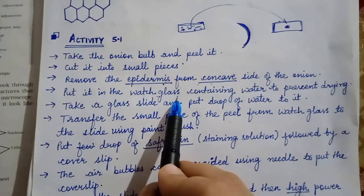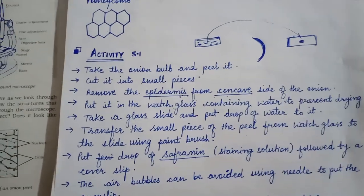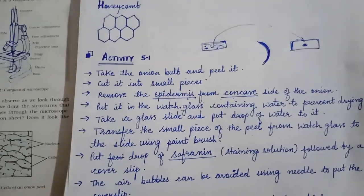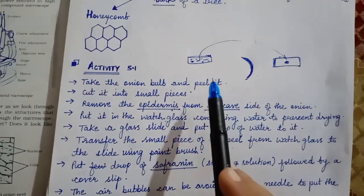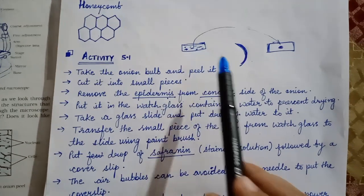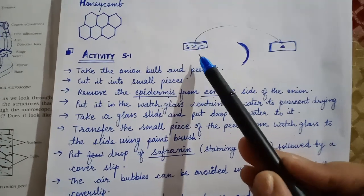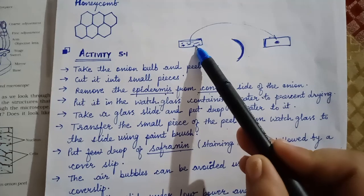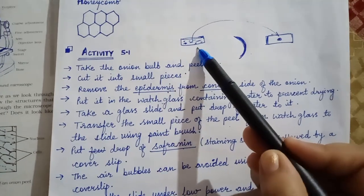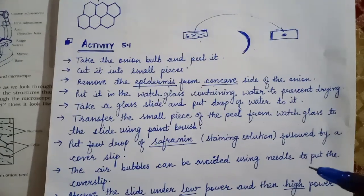Now you put it in the watch glass. Jo epidermis ko remove kiya hai, usko hume watch glass mein rakhna hai. Watch glass, this is a glass container, small glass containers hote hai. And we will fill, we will have to fill the water in this glass, watch glass. And why? Paani mein rakh denge kyun ki so that it will not dry off. Jo hume epidermal layer ko remove kiya hai, woh dry off na ho, woh fold na ho.